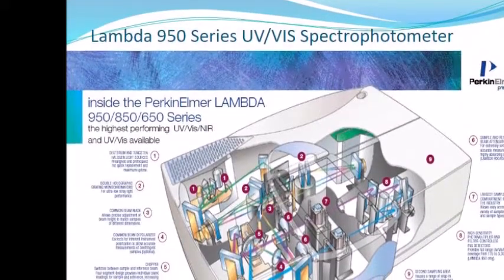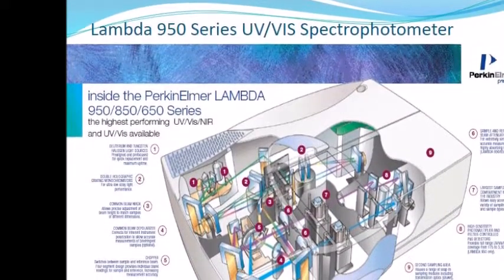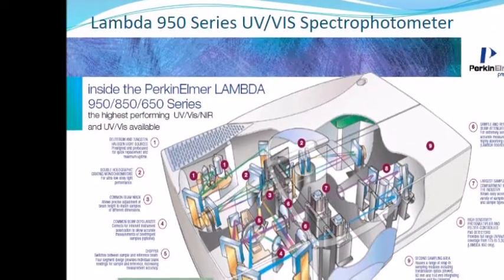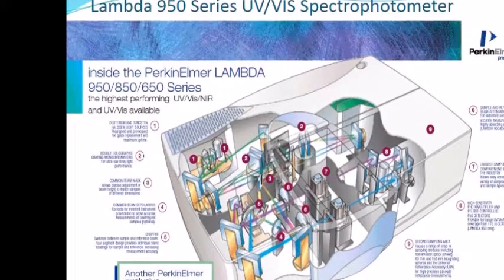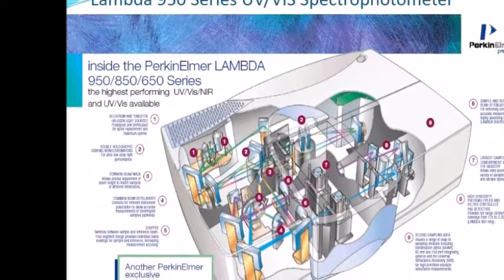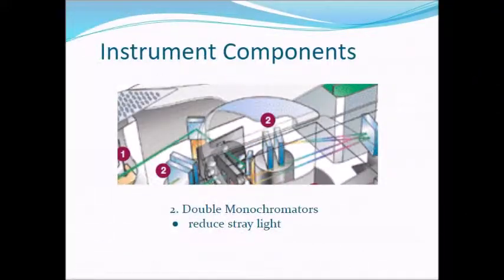The Lambda 350 UV-Vis spectrometer features a reflecting optical system and the components are coated with silica for durability. A holographic grating is used in the monochromator. The monochromator has a concave grating that goes to various wavelengths.